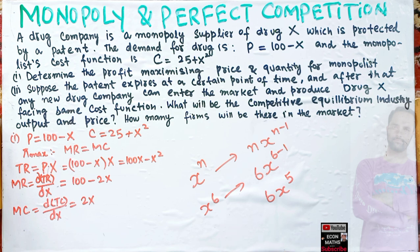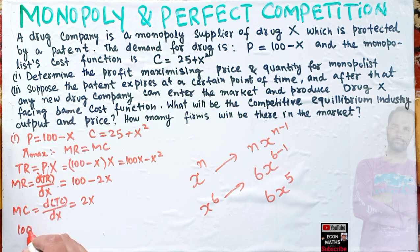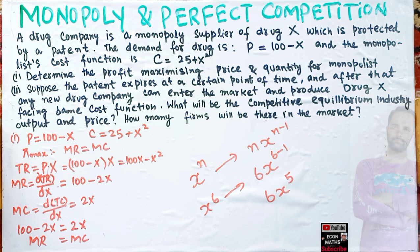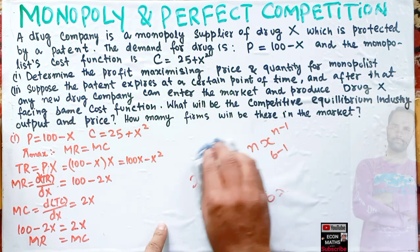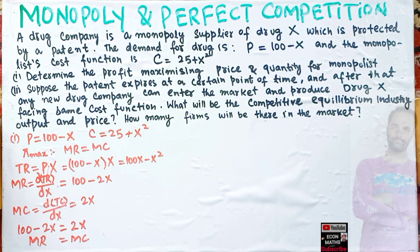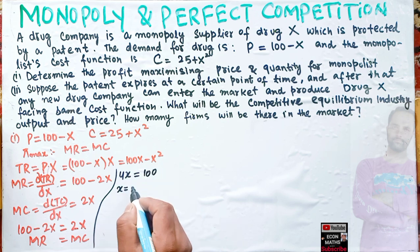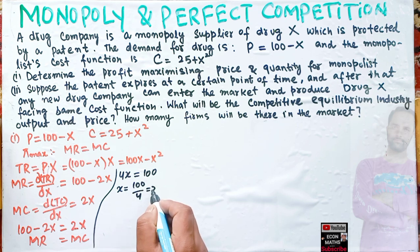Profit maximization requires MR = MC, so we set 100 - 2x = 2x. Transposing -2x to the right gives 2x + 2x = 4x, so 4x = 100, which gives x = 100/4 = 25. The monopolist will produce 25 units of the drug.